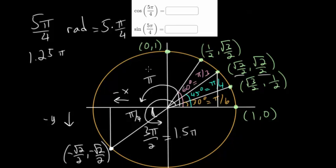So the cosine of 5π/4 equals negative root 2 over 2, and the same is true for the sine of 5π/4 — it also equals negative root 2 over 2. This is because the x and y values on the unit circle are the cosine and sine of that angle, respectively.